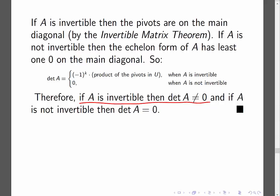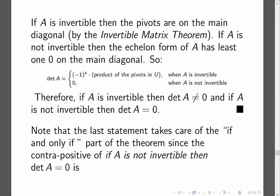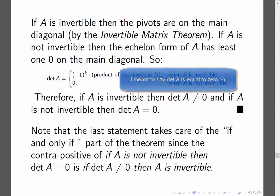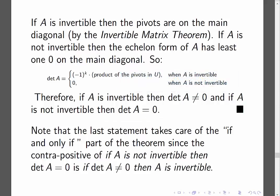The other statement actually does show the reverse direction because the if-and-only-if part is taken care of because the contrapositive of what I have here, if A is not invertible, then the determinant of A is equal to 0. If we take the contrapositive of that statement, it is if the determinant of A is not equal to 0, then A is invertible.